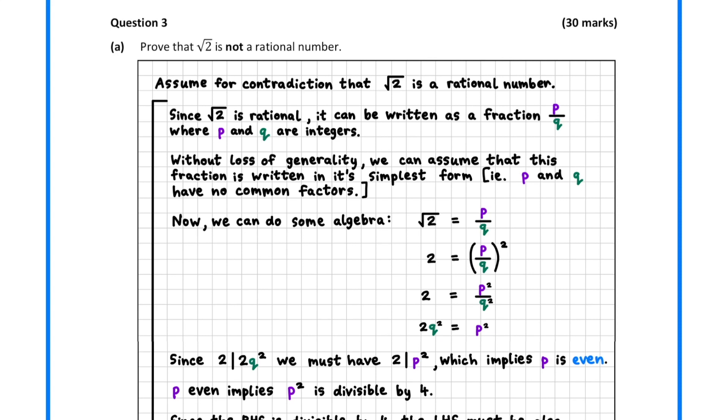In question 3a, we can use a proof by contradiction to show that root 2 is not rational. To begin, we assume that root 2 is rational and express it as a fraction of two integers, p and q. We can assume the fraction is written in its simplest form, which implies that p and q have no common factors.